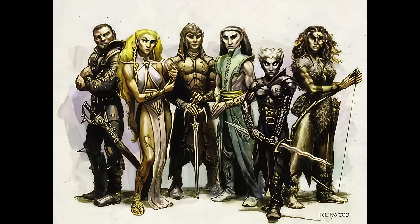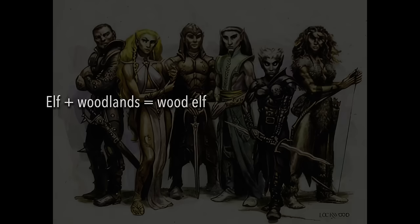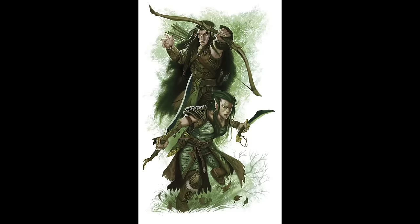Here's the elf formula: elf plus thing equals elf sub-race of thing. You take the baseline elf — the long-lived, graceful, beautiful, nature-dwelling race with the pointy ears — and you add some other ingredient. Usually that ingredient is drawn from the natural world or from an archetype.